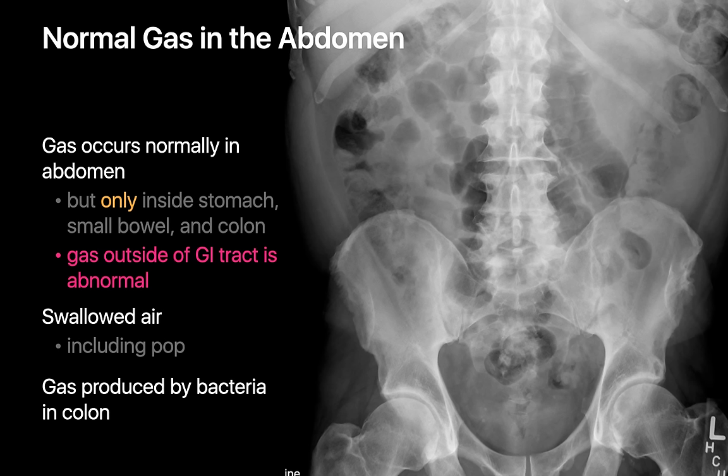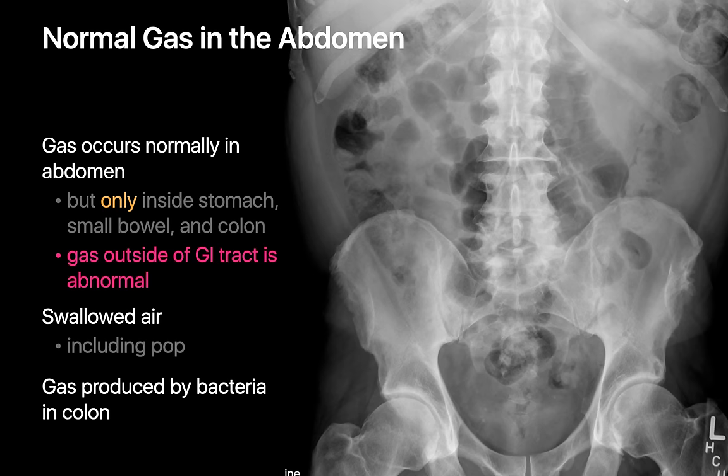Gas occurs normally in the abdomen but should only exist inside the GI tract. Normal gas inside the GI tract comes from air we swallow, carbonated beverages, and gas produced by the bacterial flora in our colon. Most of the time we can distinguish whether a gas pocket is inside the stomach, small bowel, or colon.